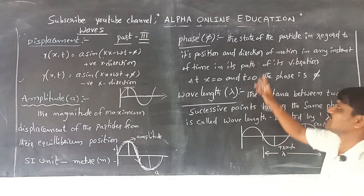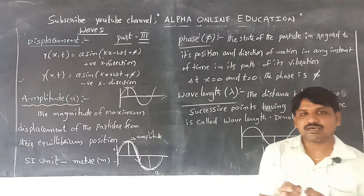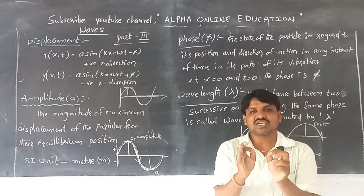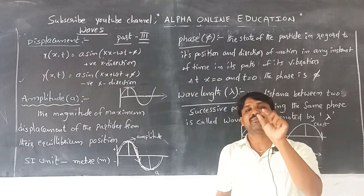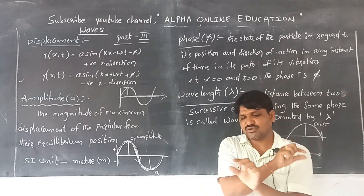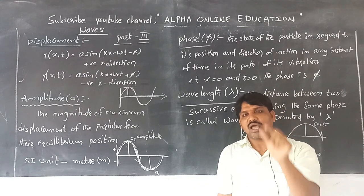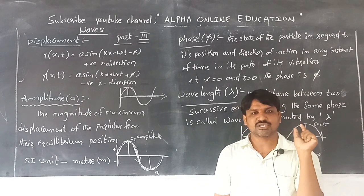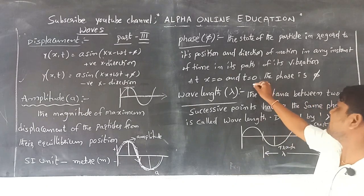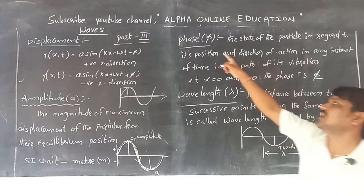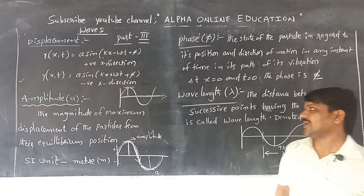Phase is denoted with φ. Whenever x = 0 and t = 0, meaning when the vibrating particle is at rest and no wave is forming, the phase angle will be φ. So the phase is denoted with φ.